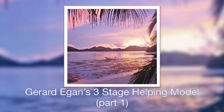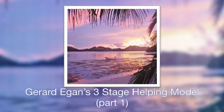The Egan model aims to help a person in distress to address three main questions. What is going on? — this question is located in stage one of the model. What do I want instead? — located in stage two. And how might I get to what I want? — which is in stage three.